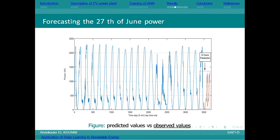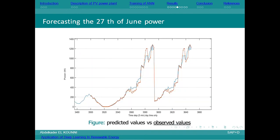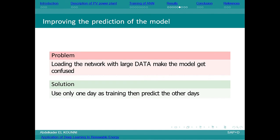Even though the model was able to predict the evolution of the power, sometimes it overestimates and sometimes it underestimates. The problem is that loading the machine learning model with too much data was causing it to get confused because of the energy management of the inverter.